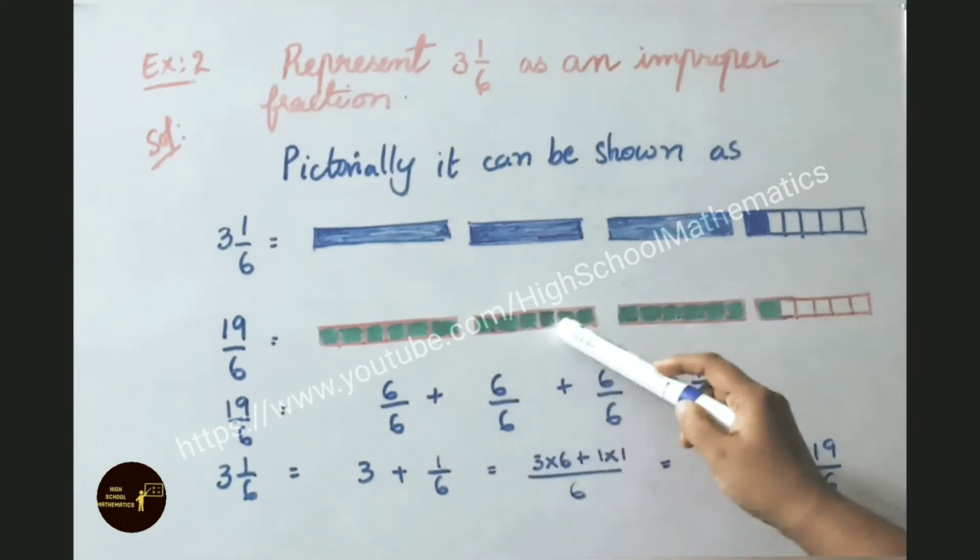So 6 by 6 all shaded. Second 6 by 6. Third 6 by 6. Fourth, 1 out of 6 only one shaded. If we add all of them we got 19 by 6.